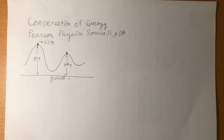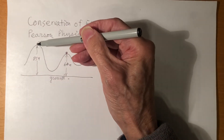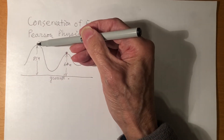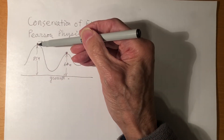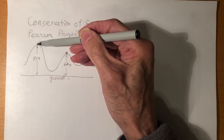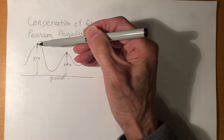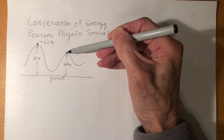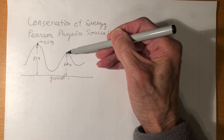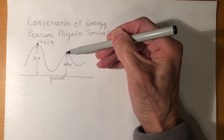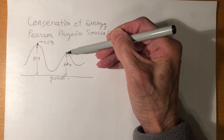What does the conservation of energy say? It says the sum of kinetic energy plus potential energy at position 1 is equal to the sum of kinetic energy plus potential energy at position 2.